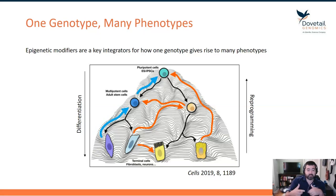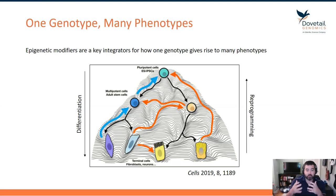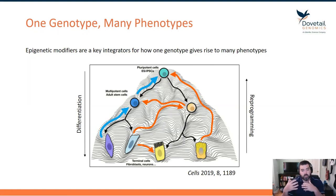The other way to think about it is that you could reprogram cells by re-inducing pluripotency, having them move back up the Waddington landscape to the original pluripotent cell type. It's this model where you start with one genotype and, through epigenetic modifications, can have many different phenotypes — that's the central dogma of development.